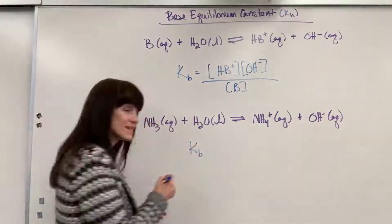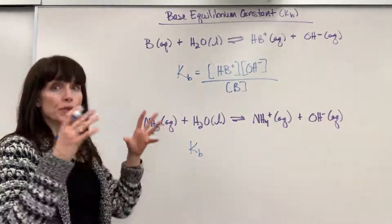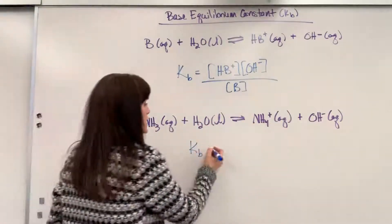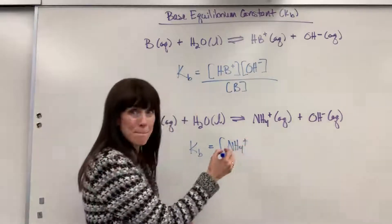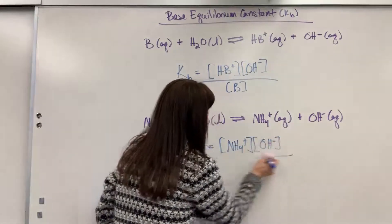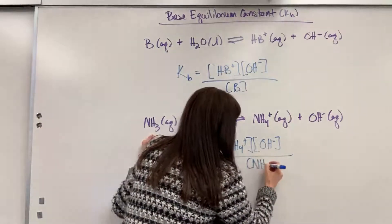Let's write down our base equilibrium expression, our Kb. That's the equilibrium constant, the ratio of products over reactants when we reach equilibrium. This is going to equal products: ammonium times the hydroxide divided by ammonia. And that's going to be NH3.